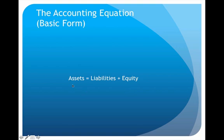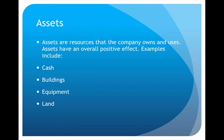In order to understand that equation, we need to understand the meaning of each item so we can understand the relationship between them. The first item is assets. Assets are resources that the company owns — things that are very positive, things that we want to own and utilize in the business.